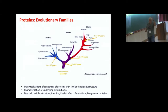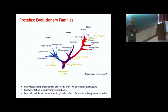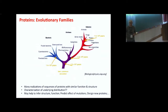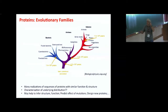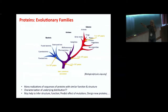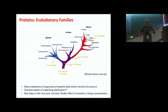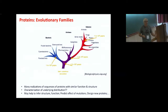If we compare all these sequences, that may help us infer the structure, the function, predict the effect of mutations, design new proteins, and so on — sequences that have never been sampled by evolution. That's called the study of homology — the similarities between all these evolutionarily related proteins.